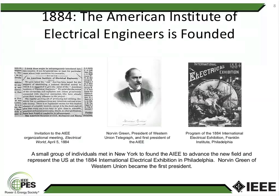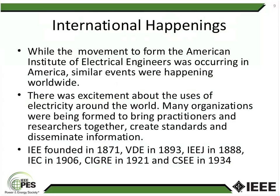So in 1884, the American Institute of Electrical Engineers was formed, with first president Norvin Green, and they were ready for the International Electrical Exhibition. This is what was happening in the United States. There was similar excitement around the world about electricity and its uses — how so many appliances could make the drudgery of housework easier. Business could also use it. Lighting was also very popular, which wasn't as readily available before; now you could have street lights and signs for businesses.